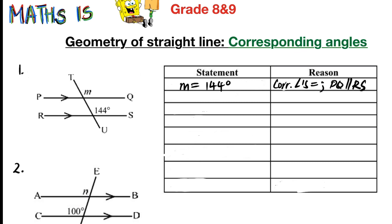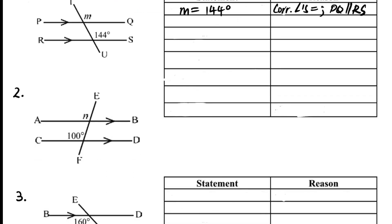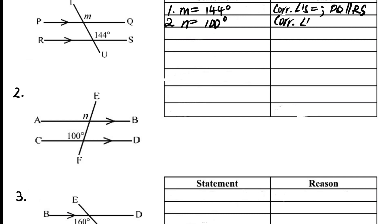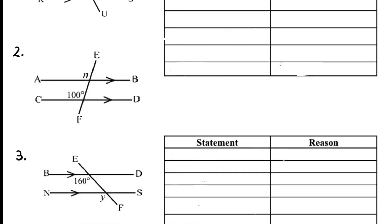In number two, we have two parallel lines AB and CD with transversal EF. The unknown angle is n and we are given 100°. There is an F-shape formed, so n is equal to 100 degrees. The reason: corresponding angles equal because line AB is parallel to CD.